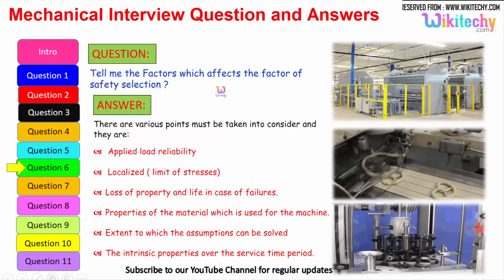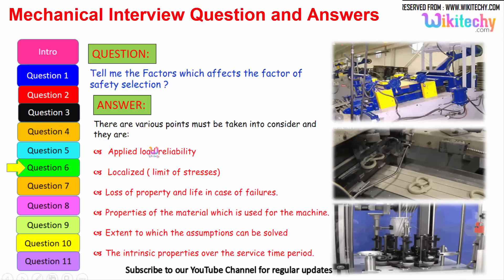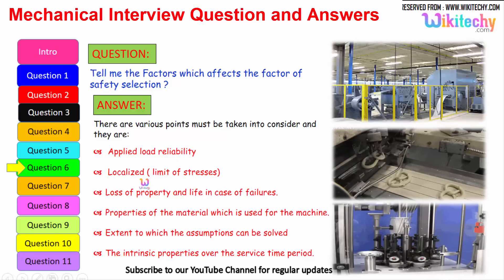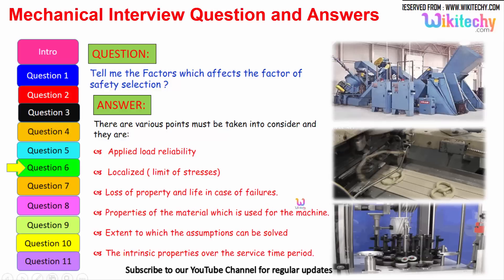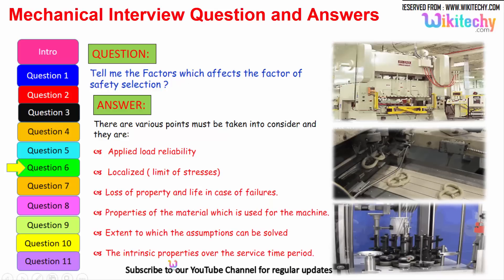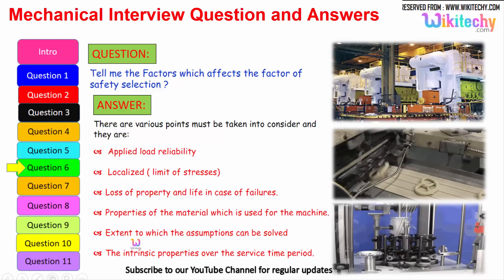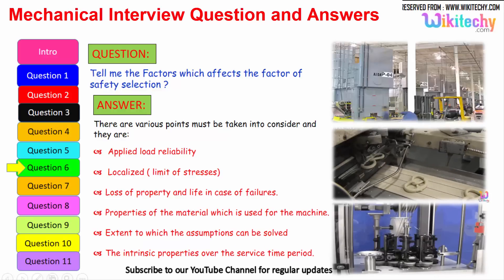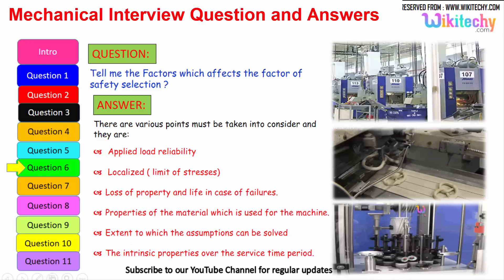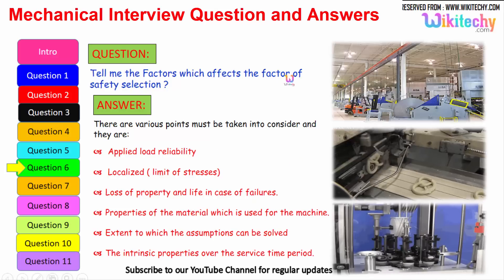Now let us see the factors which affect the factor of safety selection. Here are some of the factors: applied load reliability, limit of stresses localized, loss of property and life in case of failures. This is a very important factor you should understand on safety selection. Properties of the material which is used for the machine, what kind of material you are using. The extent to which the assumptions can be solved, how much it will extend, compress or something like that. The intrinsic property over the service time period, how it will sustain, everything we need to manipulate for the factor of safety selection.